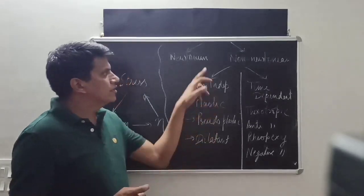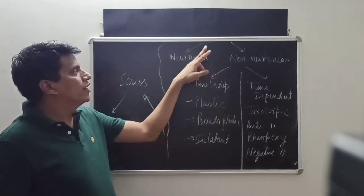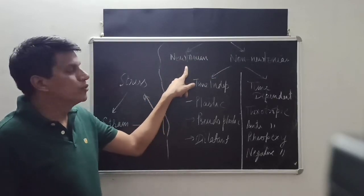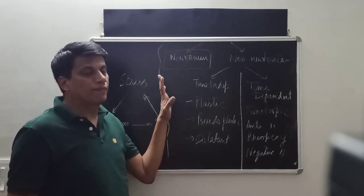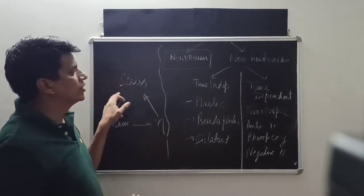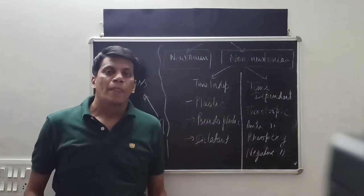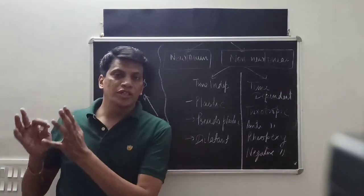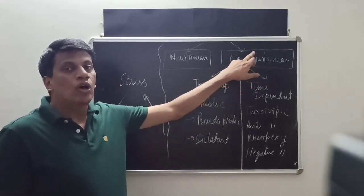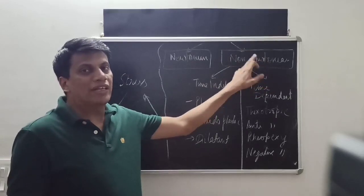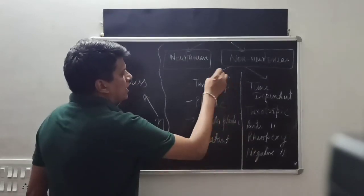Fluids are classified into those which follow Newton's law — called Newtonian materials — which have constant viscosity that does not change with stress. Non-Newtonian materials do not obey Newton's law; their viscosity is not constant and stress is not proportional to strain. They are also called structural liquids.